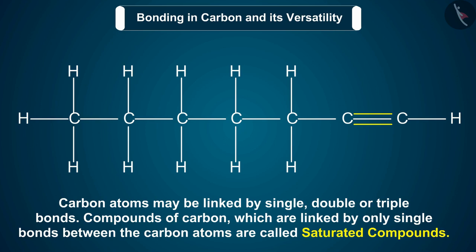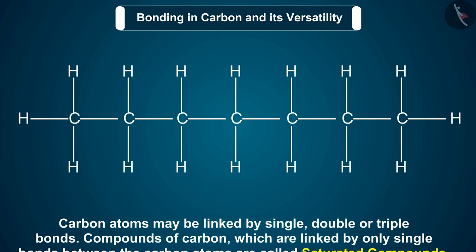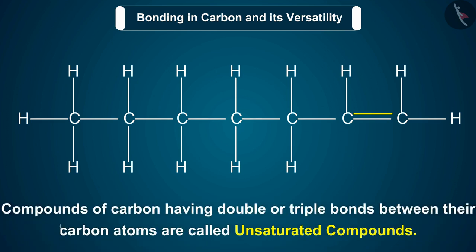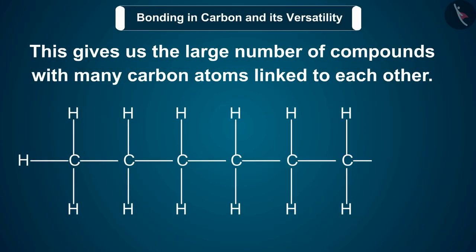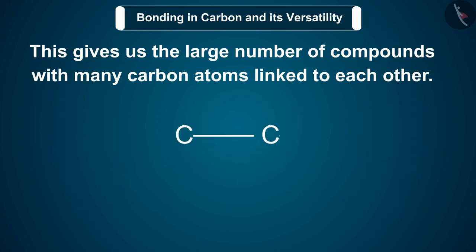In addition, carbon atoms may be linked by single, double, or triple bonds. Compounds of carbon which are linked by only single bonds between the carbon atoms are called saturated compounds. Compounds of carbon having double or triple bonds between their carbon atoms are called unsaturated compounds. This gives us the large number of compounds with many carbon atoms linked to each other.